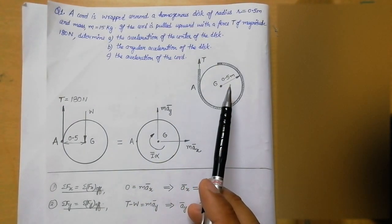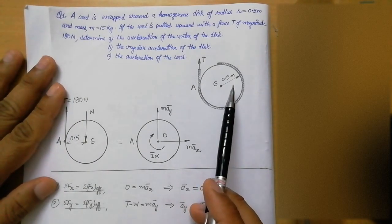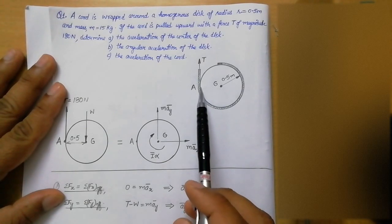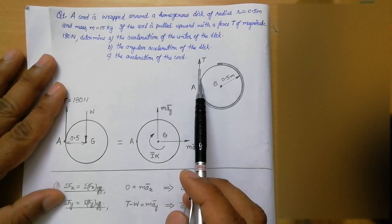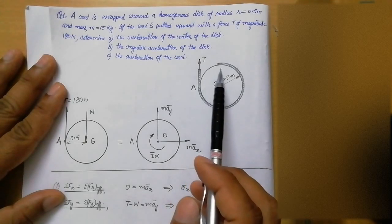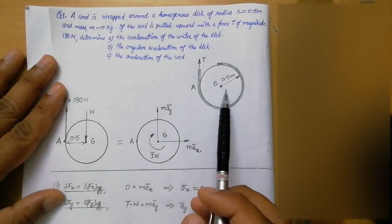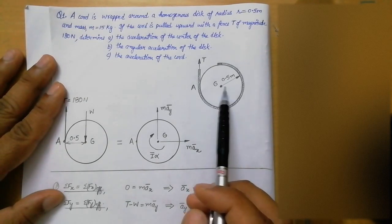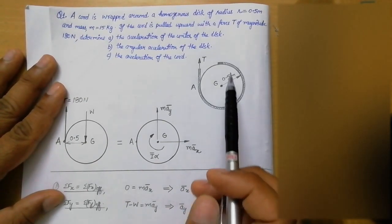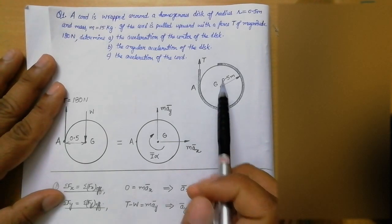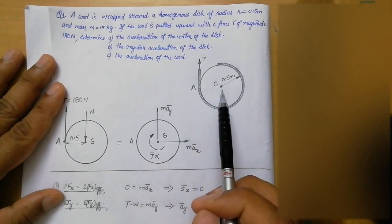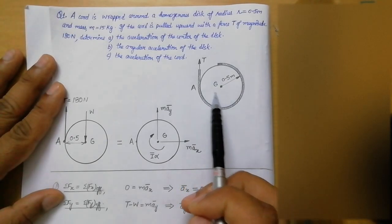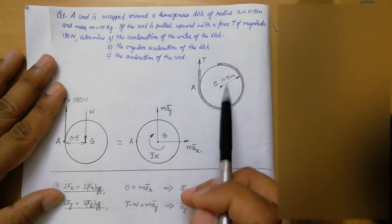In order to solve this particular problem, we first have to understand what is happening. When we pull this cord upward, there will be three possible motions: the disc can travel along the x direction — there will be some acceleration along the x axis — there can also be some acceleration along the y axis, and the disc will also start rotation, resulting in a rate of change of angular momentum.